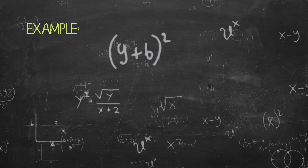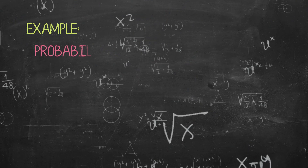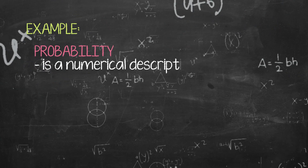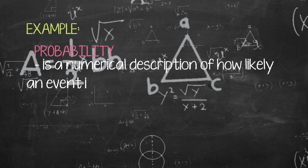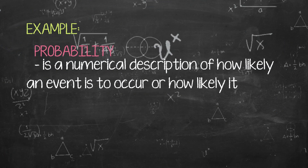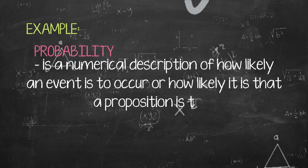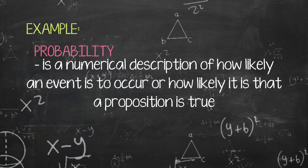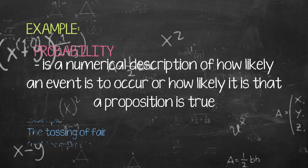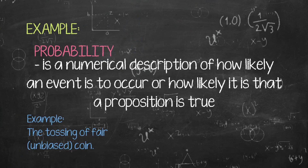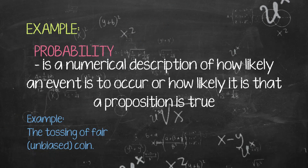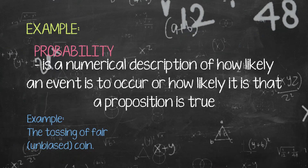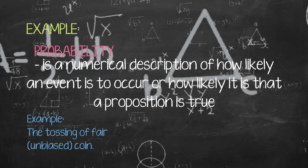The best example for certainty is probability. Probability is a numerical description of how likely an event is to occur or how likely a proposition is true. Probability can be expressed numerically between 0 and 1: 0 indicates impossibility while 1 indicates certainty. The higher the probability, the more likely the event will occur.